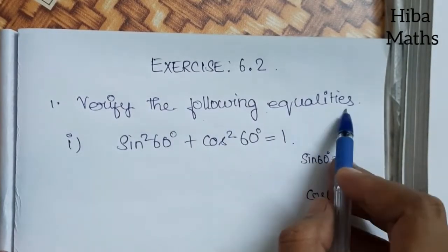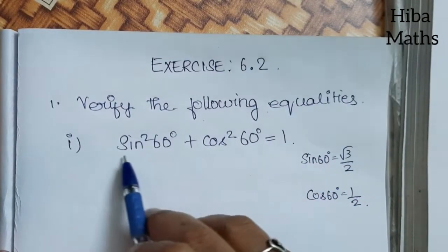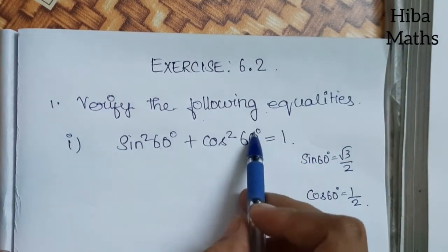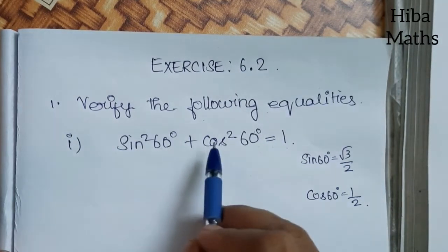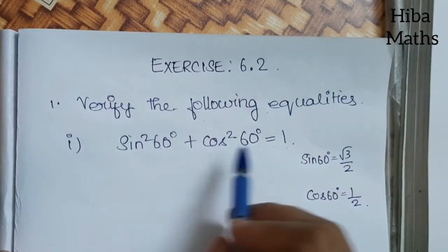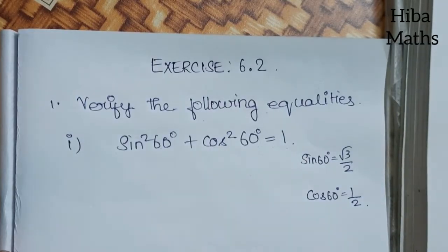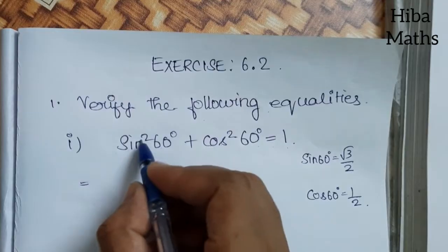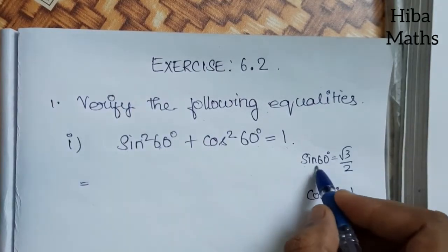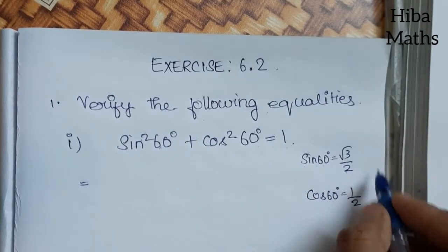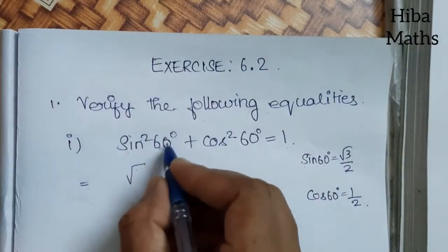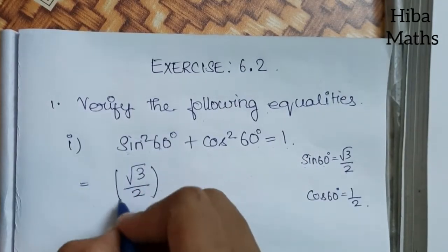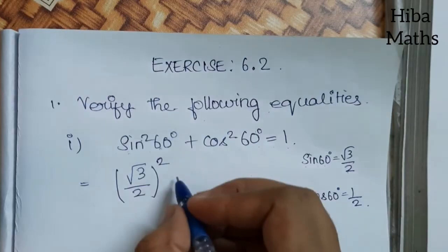First question: verify the following equality. sin²60° + cos²60° = 1. If we solve this, sin²60° — the value of sin60° is √3/2, so sin²60° = (√3/2)². Let's check if this is correct.